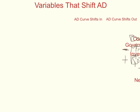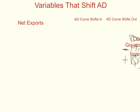The last component is net exports. Net exports means exports minus imports. An increase in imports will shift the AD curve in and decrease real gross domestic product, while an increase in exports will shift the AD curve out.